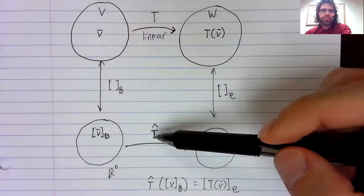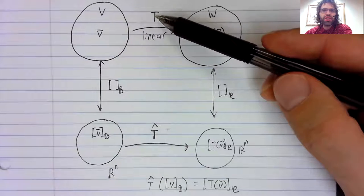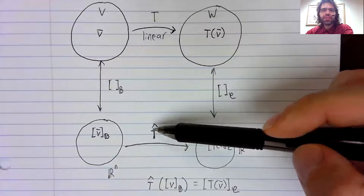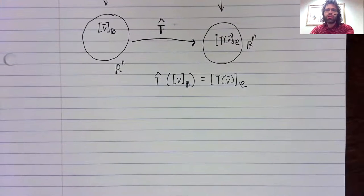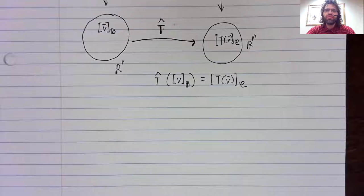Now, if T hat is supposed to be in some way identical to T, and T is linear, then T hat had also better be linear. And that's what we're going to discuss in this video.